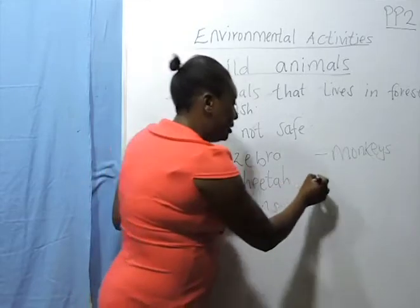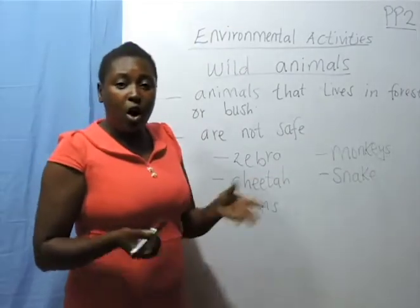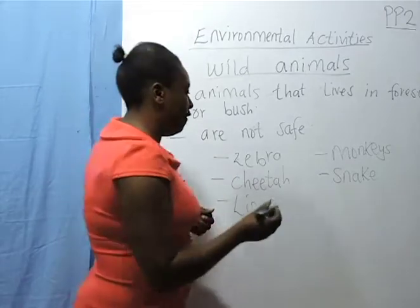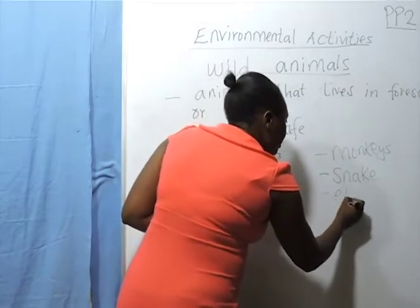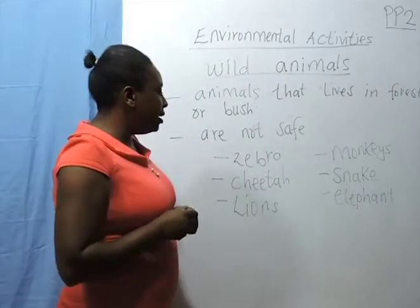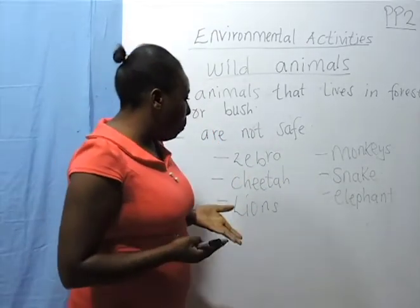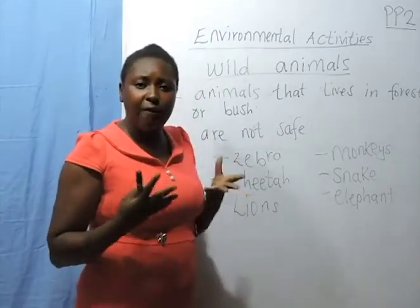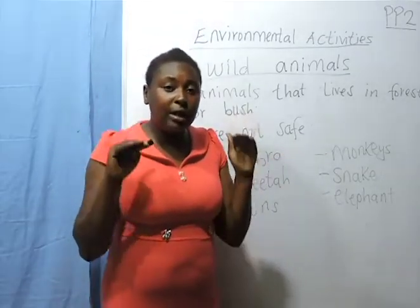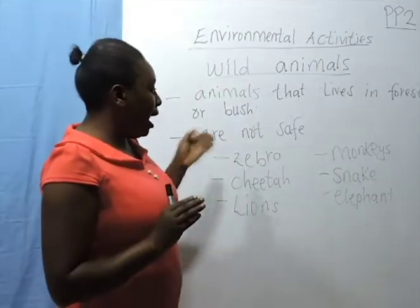Another animal is a snake. Most of us have seen a snake, either on videos or in holes somewhere. We also have elephants — an elephant is also a wild animal. To just name a few more: we have giraffes, we have leopards, we have hares, hedgehogs, and even kangaroos — the great kangaroos you always see on videos, jumping up and down. These are all wild animals.